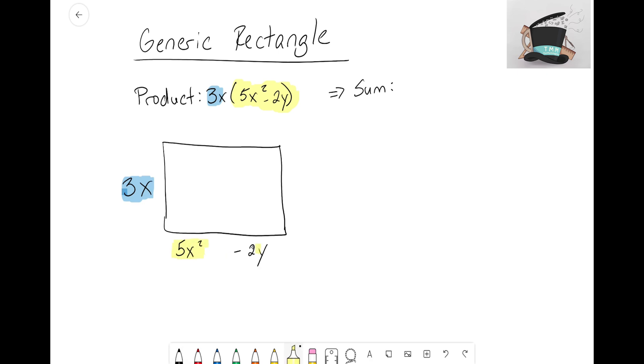I see on the bottom I have two different terms, so I'm going to draw a line going up. On the left side I only have one term, so I don't need to draw a line going down the middle.